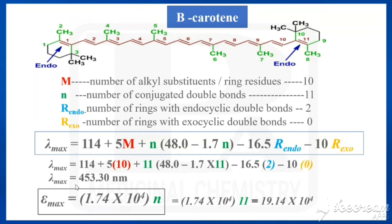For epsilon max of beta-carotene, using the formula εmax = 1.74 × 10^4 × n, with n = 11, we get εmax = 19.14 × 10^4. That is the value for epsilon max of beta-carotene.